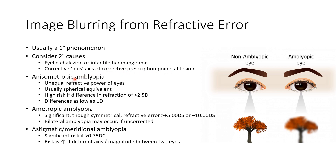Other causes of amblyopia include anisometropic amblyopia, ametropic amblyopia, and astigmatic or meridional amblyopia. In anisometropic amblyopia there is unequal refractive power of the eyes, usually referring to the spherical equivalent. There is high risk of amblyopia if the difference in refraction is more than 2.5 diopters, though differences as low as one diopter can also cause anisometropic amblyopia.